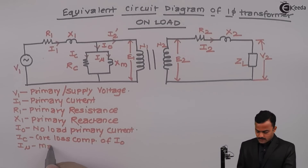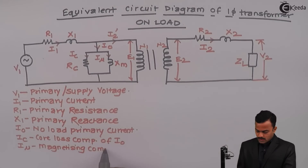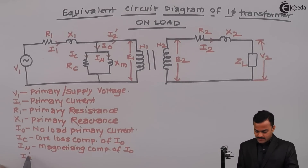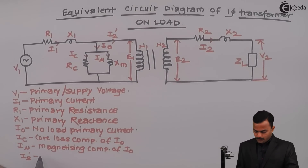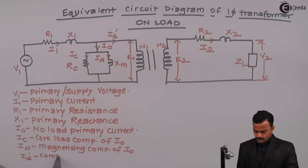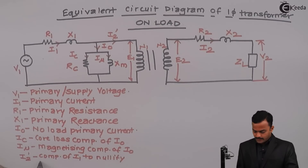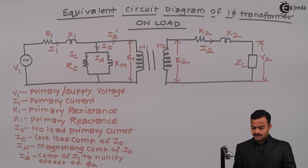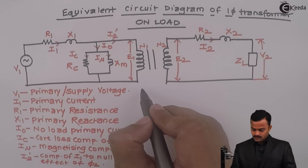Imu is the magnetizing component of the no-load primary current I0. I2' is the component of I1 that acts to nullify the effect of phi2, which is the flux produced by the secondary current I2.